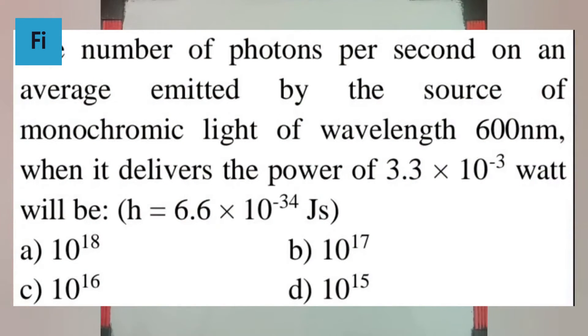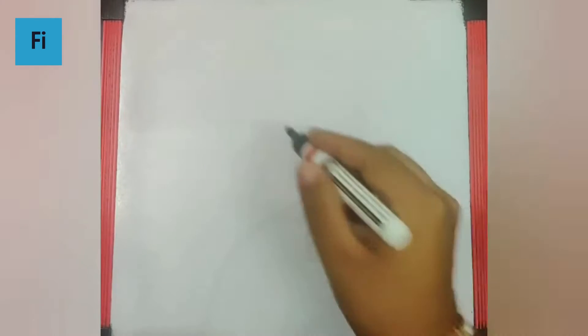The question says the number of photons per second on an average emitted by the source of monochromatic light of wavelength 600 nanometers when it delivers the power of 3.3 × 10^-3 watt will be.